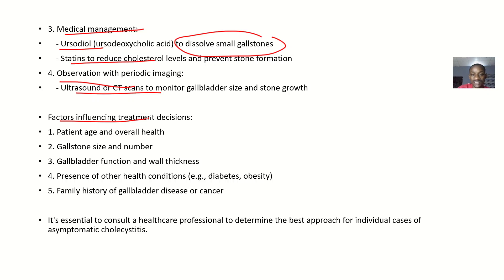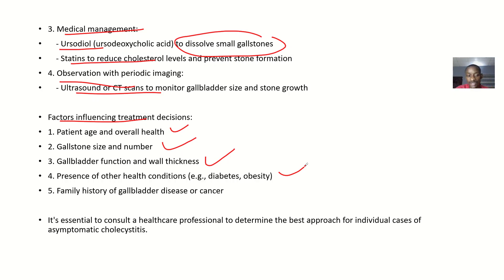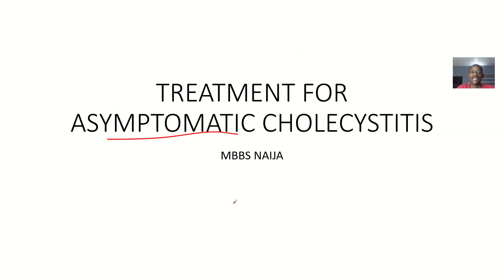Factors influencing treatment decisions include patient age and overall health, gallstone size and number, gallbladder function and wall thickness, and the presence of other health conditions. If the patient has a family history of gallbladder disease or cancer, you would opt for cholecystectomy. That's it about treatment for asymptomatic cholecystitis.